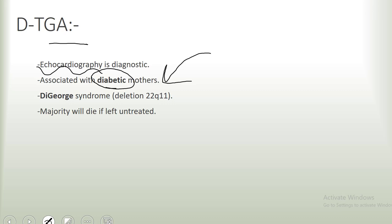Another very high-yield association is DiGeorge syndrome, which is a deletion in chromosome 22q11. The treatment for TGA is complex and you won't be asked about it in Step 1 exam, but it usually involves creating an artificial shunt between the two circulations if there is none already. The majority of children will die if they're left untreated. If you want to see more of these videos, you can give this video a like, subscribe to the channel, and thanks for watching.